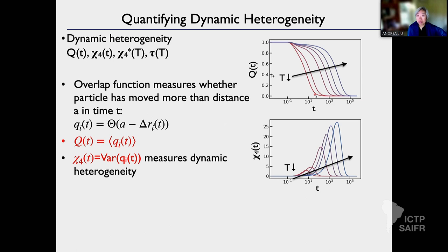The overlap parameter measures how far each particle moves from its initial position at time t equals zero. So you start with t equals zero and say: how long does it take for each particle to move away? You can look at the mean of this quantity — the average overlap. At higher temperature (the red curve) it decays more rapidly, and as I lower the temperature it decays more slowly. That's the mean of the overlap per particle.